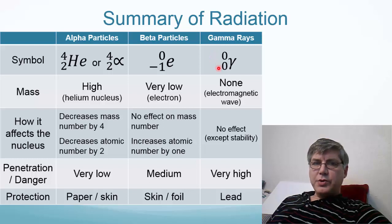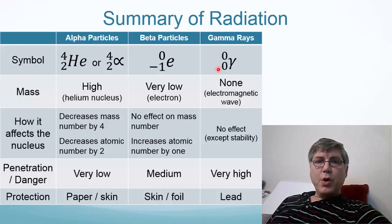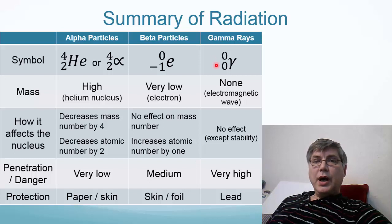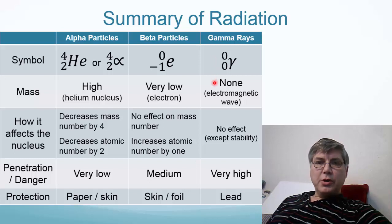The last is a gamma ray. It has zeros above and below to indicate that it has no effect on the nucleus at all, except for increasing the nuclei stability, and it has no mass because it's not a particle, it's an electromagnetic wave.